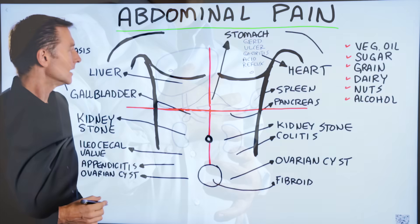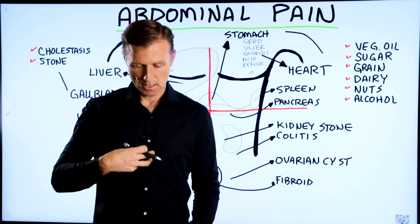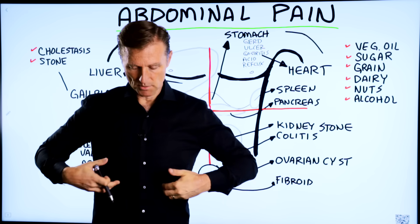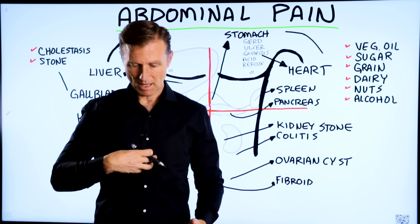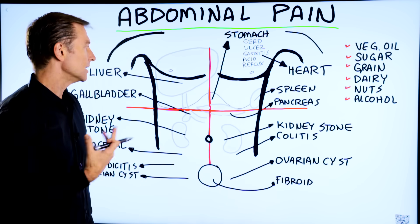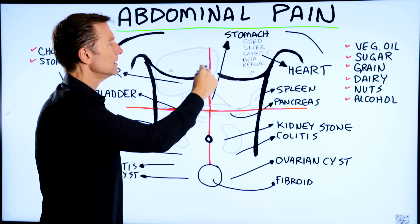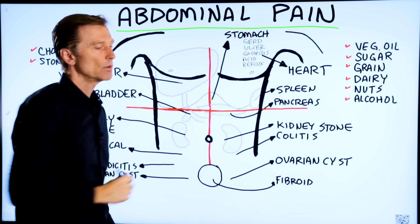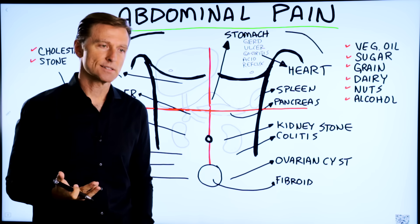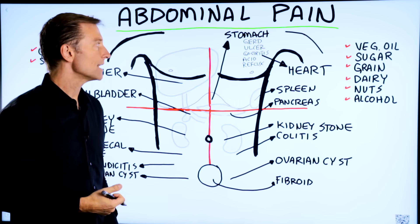Some people have pain right above the xiphoid process — that's called the epigastric area. If you have pain or discomfort here, that is stomach-related. It could be GERD, which is a problem with your valve — basically acid reflux — and that's because you don't have enough acid in your stomach. You can also have indigestion, which is not enough acid, making you unable to digest food, especially protein.